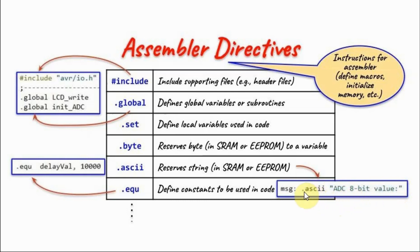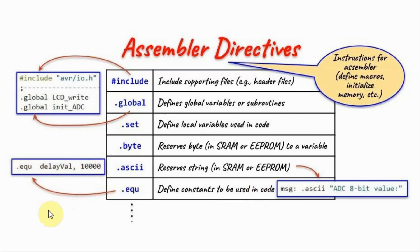The directive must be preceded by a label. Finally, we have the equate directive which defines a constant to be used in the code. For example, here we are assigning a constant value to a variable via the equate directive.